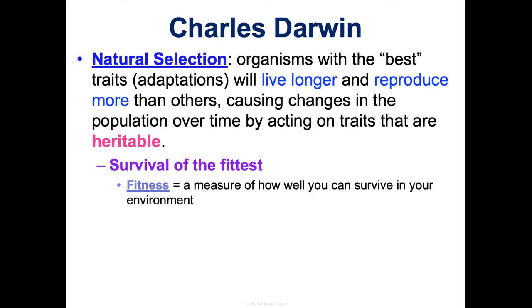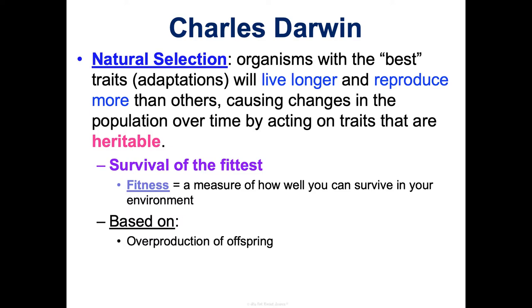Fitness is just a measure of how well you can survive in your environment. If you have better traits than other organisms, you'll live longer and reproduce more, so your genes will become more common in the offspring. Over time in a population, better and more fit traits become more common — nature selects out the best ones. This is based on four principles: overproduction of offspring, variation, adaptation, and descent with modification.